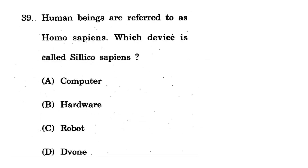Question 39: Human beings are referred to as Homo sapiens. Which device is called 'Silico sapiens'? Options: computer, hardware, robot, drone. The correct answer is obviously option A - computer. Computer is called Silico sapiens because humans created computers; just as humans are Homo sapiens, computers are Silico sapiens (silicon-based).